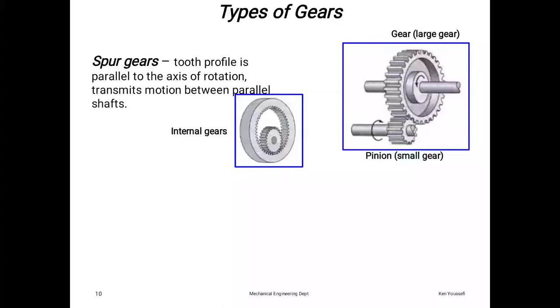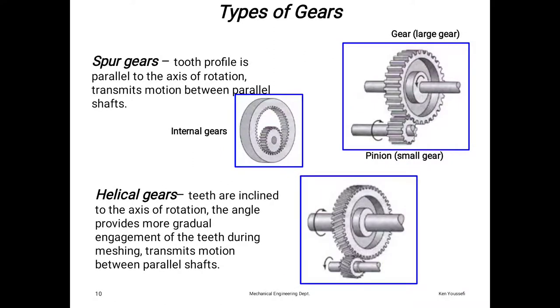Helical gear: teeth are inclined to the axis of rotation. The angle provides more gradual engagement of teeth during meshing, transmitting motion between parallel shafts. Comparing spur gear and helical gear, you see the difference: spur gear teeth are parallel to the shaft axis, while helical gear teeth are inclined and helical to the shaft axis.